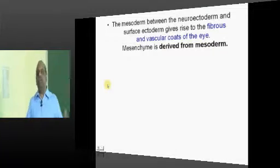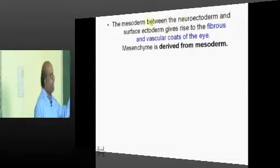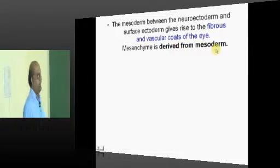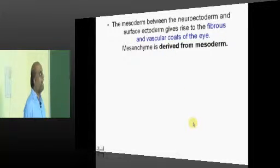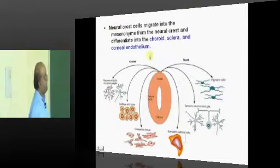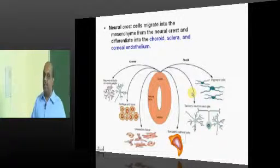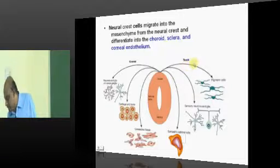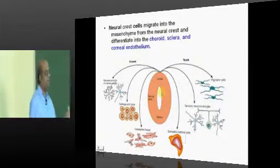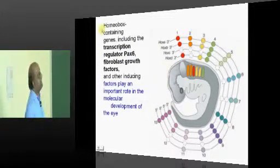What is mesoderm doing? It is there between neuroectoderm and surface ectoderm and gives rise to all the fibrous and vascular coats of the eye. Then you have neural crest derivatives which contribute to eye development. Choroid, sclera, and corneal endothelium are fundamentally from neural crest cells.